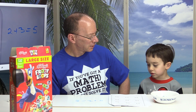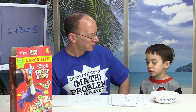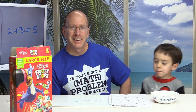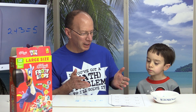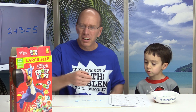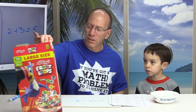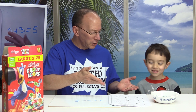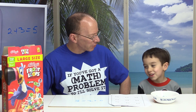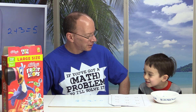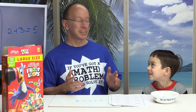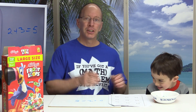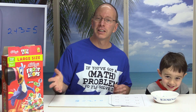Hey, welcome to another show. Today we are going to do Number Bonds. We're going to be doing Number Bonds, but Lucas, you got cereal out. What's going on with the cereal? What are you going to use the cereal for? We're going to use them for manipulatives. Manipulatives? That's a great idea. Using Fruity Loops as manipulatives.